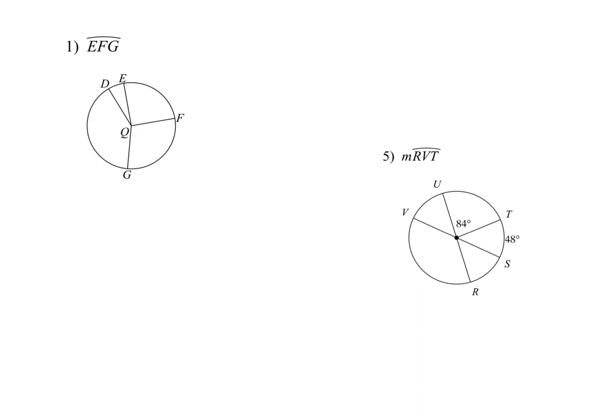They've given you this major arc E, F, G. You want to make sure you know what they're asking about — they're asking about E to F to G. They want the central angle that makes that, which is going to be E to Q to G. So you're going to tell me angle E, Q, G. That's all you're doing for those.